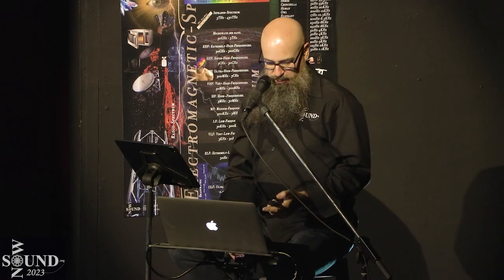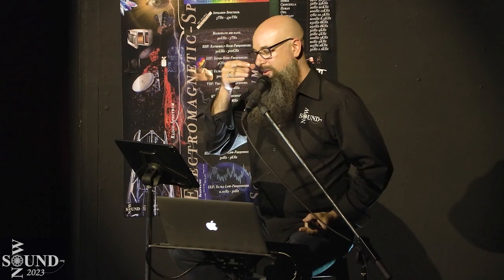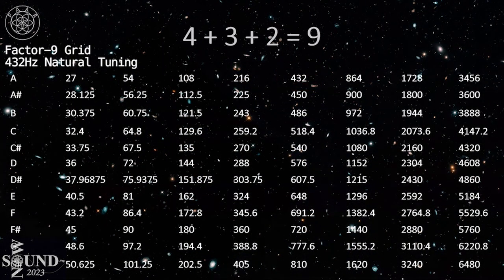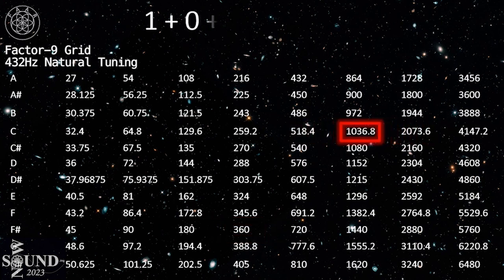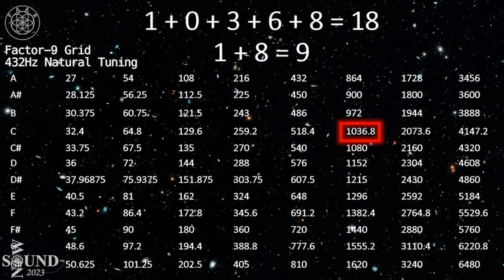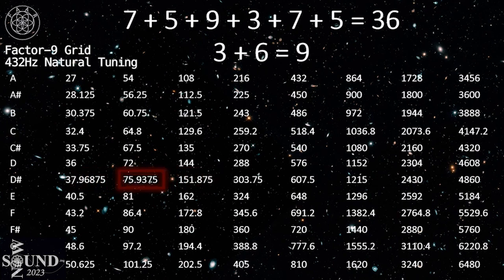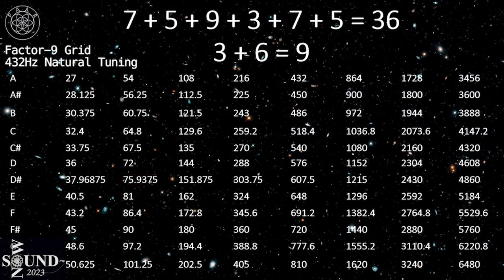432 Pythagorean tuning was based off maths and geometry. With 432: 4 + 3 + 2 = 9; 180: 1 + 8 + 0 = 9 — they all sum to nine. Any sound you can think of will match up to the geometric shape.